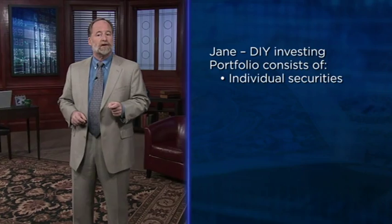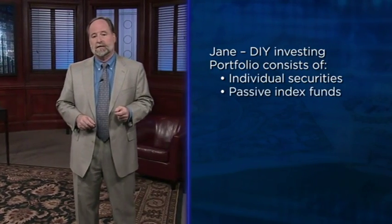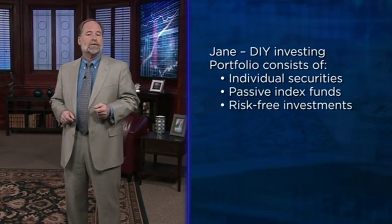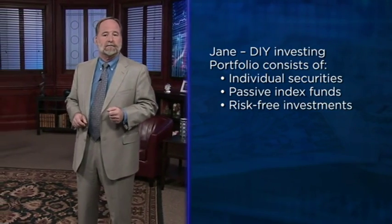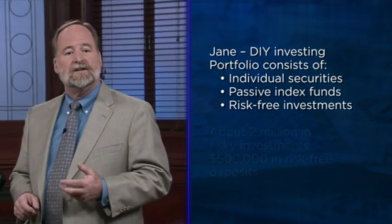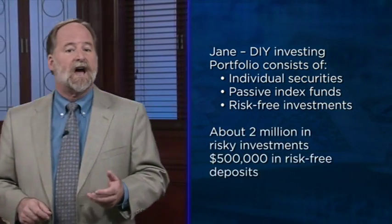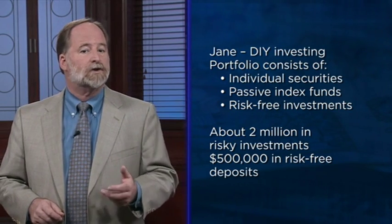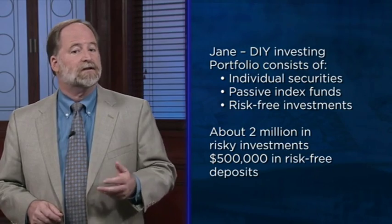Remember Jane and Ichabod? Jane is doing her own investing. She has a portfolio that consists of individual securities as well as a few passive index funds. This portfolio also consists of cash and some investments in short-term risk-free investments, like certificates of deposit, money market deposits, and treasury bills. If you exclude these securities and deposits, she has about $2 million in risky stocks, corporate bonds, and index funds. She only has $500,000 in short-term deposits that are essentially default-free.